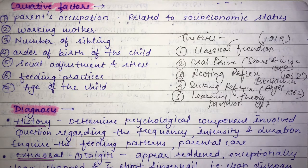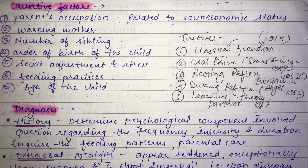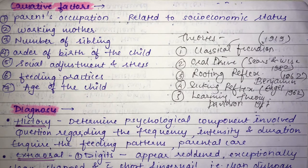Regarding etiological factors, first is socioeconomic status. In high socioeconomic status, the mother is in a better position to feed the baby, but if the socioeconomic status is low, the mother is unable to provide sufficient milk to the infant, and the infant sucks the thumb to overcome hunger. Similarly, a working mother cannot pay much attention to the baby, so the feeding necessity is not fulfilled, leading to thumb sucking.